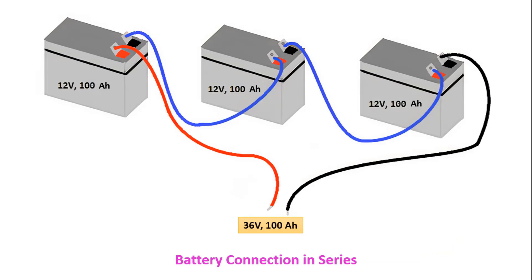We can connect batteries in series to increase the voltage value. Here we see three batteries, each 12 volts and 100 amp hours, connected in series. This way we can get 36 volts at 100 amp hours.